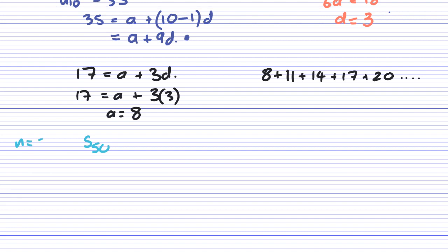Because it says for the first 50 terms, S50 will equal, and the formula was N over 2, so 50 over 2, times 2A, but we know that A is 8.